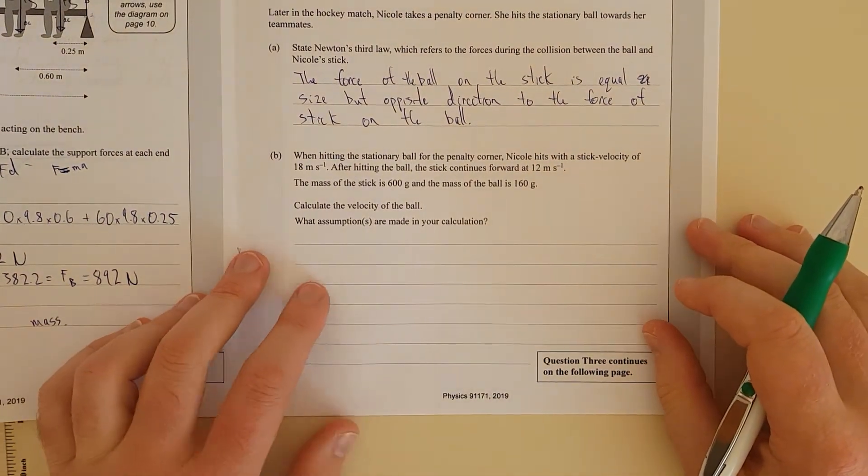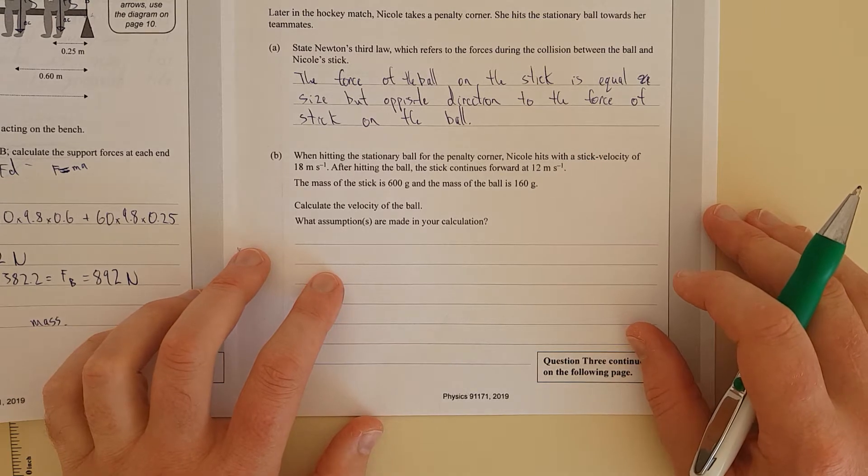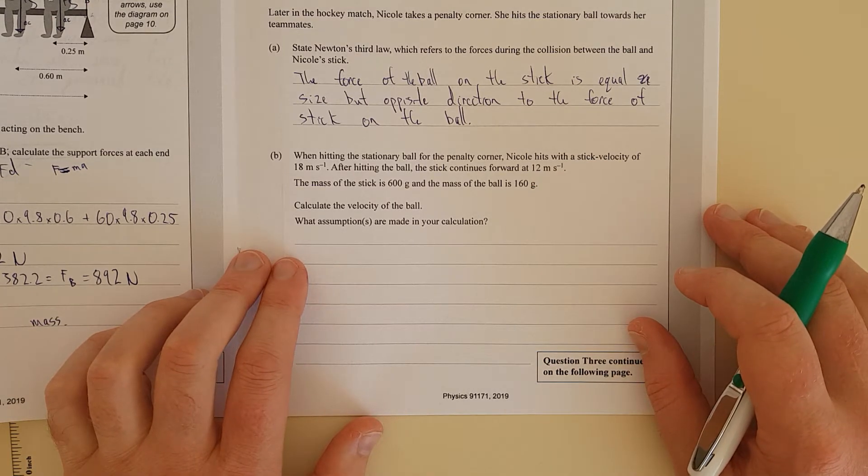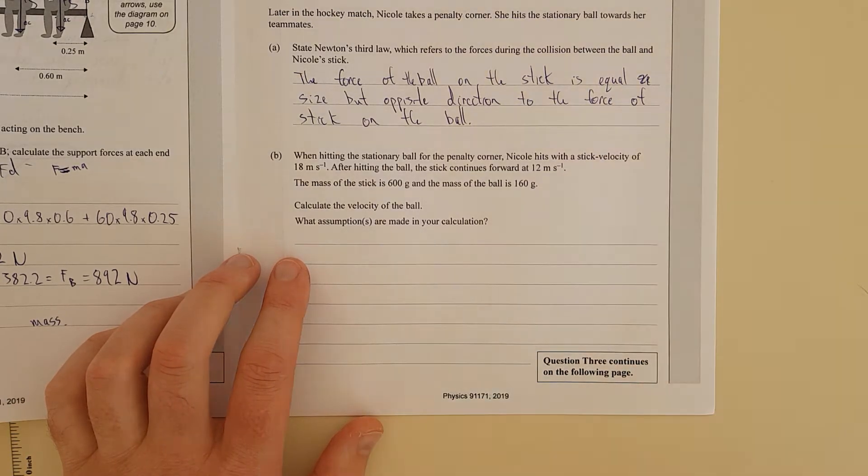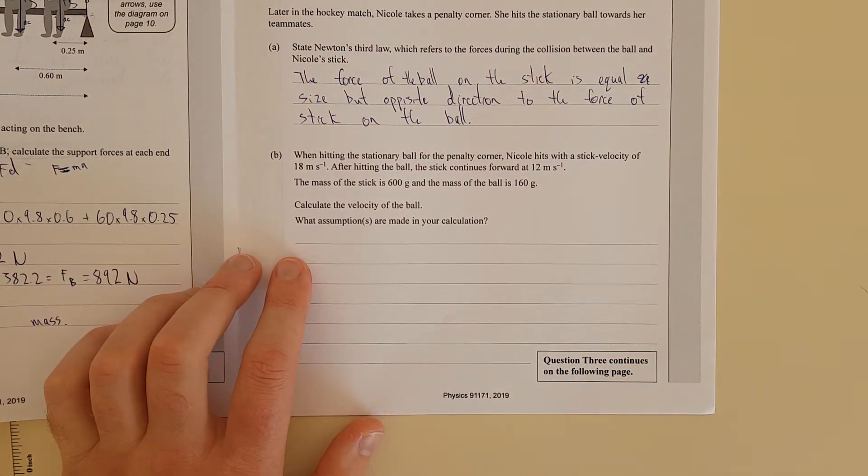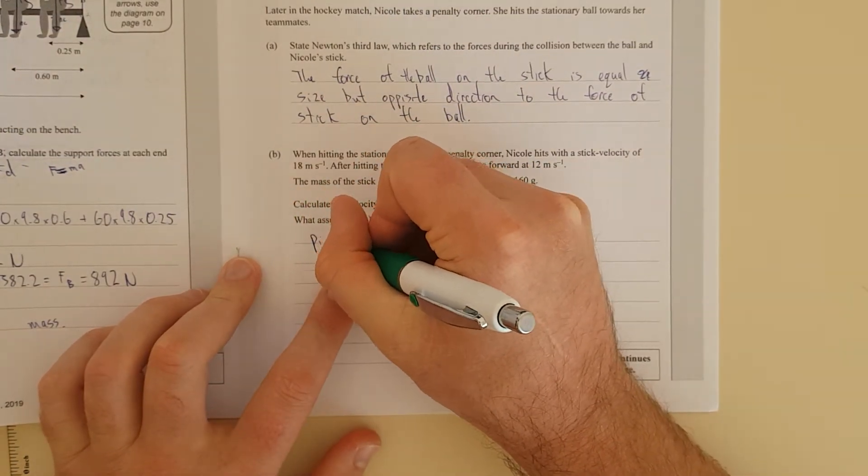Right, so when hitting the stationary ball for a penalty corner, Nicole hits with a stick velocity of 8 meters per second. After hitting the ball, the stick continues forward at 12 meters per second. The mass of the stick is 600 grams and the mass of the ball is 160 grams. Calculate the velocity of the ball. Right, so this is going to be a momentum question.